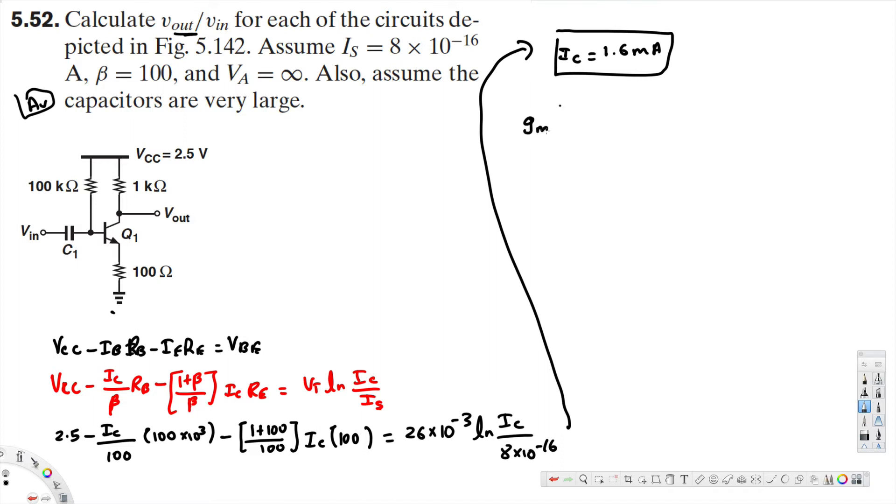To calculate the transconductance, we have the equation g_m equals I_C over V_T. We already know the I_C value, that's 1.6 milliamperes, and V_T is 26 millivolts. If you divide, you will get 61.6 millisiemens.